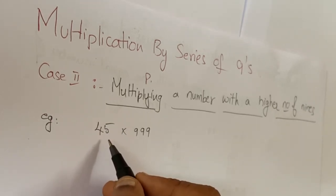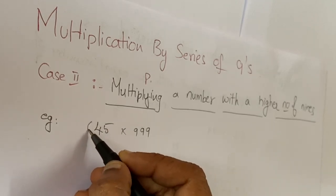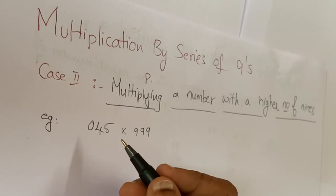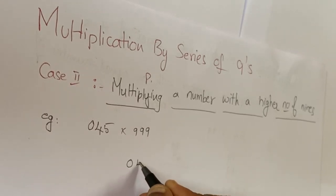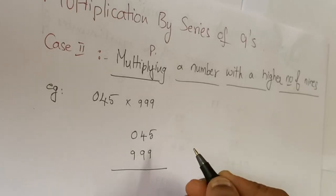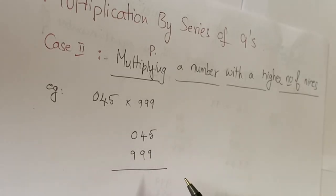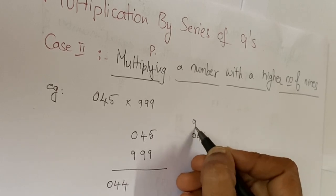We have to put zero on the left-hand side so the value doesn't change. So 045 times 999. This is the same procedure as in the first case. We have 044, and we subtract to get 955.